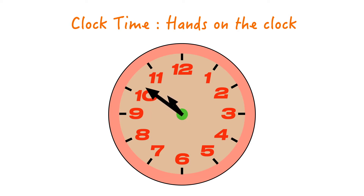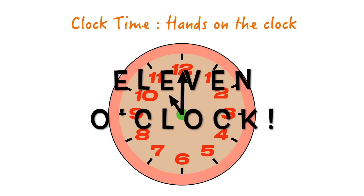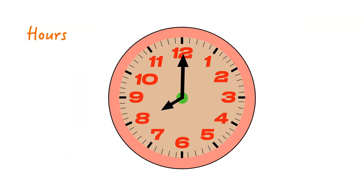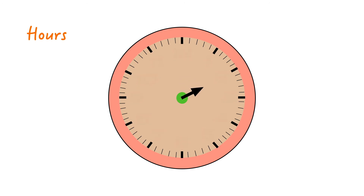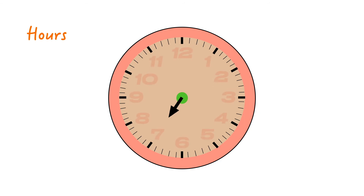We say o'clock because that's the minute hand. So what time is it right now on our clock? Eleven o'clock. On our clock we have our large numbers — these represent our hours. Our hour hand is a shorter hand because it only needs to be able to point to these large numbers, not to the actual individual minutes.